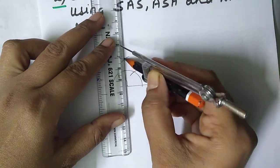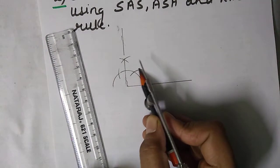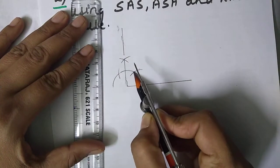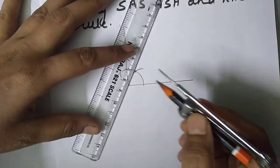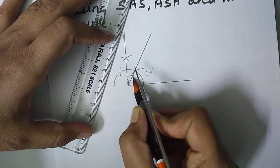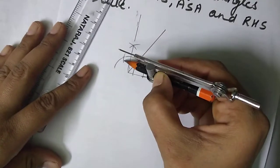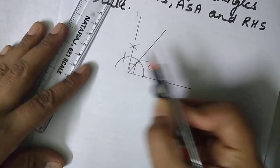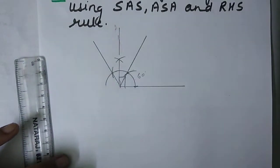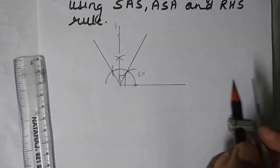To construct 60 degrees: the point where the semicircle and the first arc intersect — just join that center to this intersecting point and you get 60 degrees. To construct 120 degrees: from the same measurement, where this arc intersects the semicircle at the second point, join it to the center and you get 120 degrees. So we have now constructed 60 degrees, 90 degrees, and 120 degrees using compass.